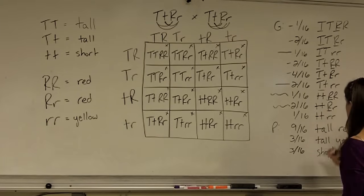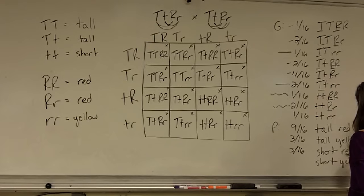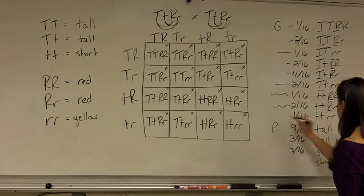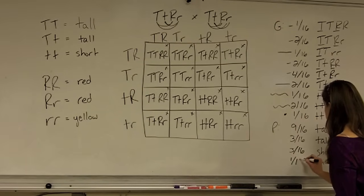And last but not least, the possibility of being short and yellow. Completely recessive, no big T, no big R. So that's this one right here, only one sixteenth.